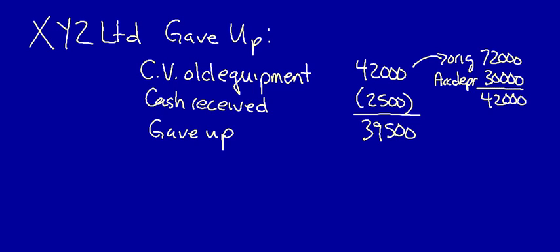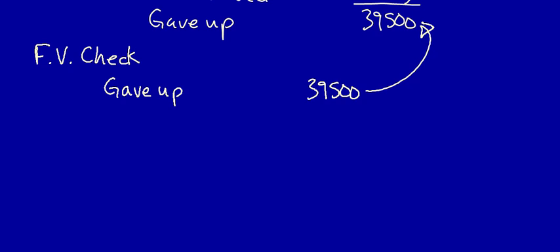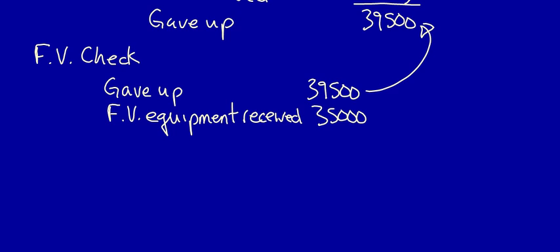As long as the fair value check doesn't apply, we use that $39,500. Let's check: the value given up is $39,500. We compare it to the fair value of the equipment received, which is $35,000. The fair value of the equipment received is less than the value of what XYZ gave up, so the maximum amount that XYZ can record their new equipment at is $35,000 — the fair value maximum.